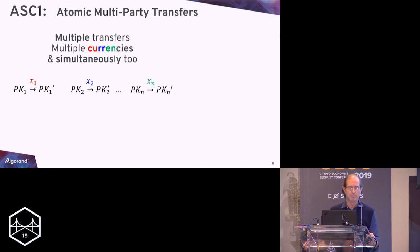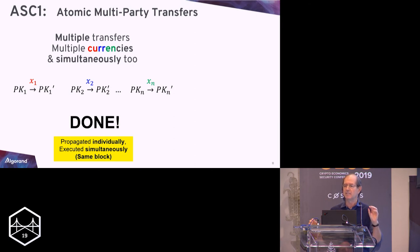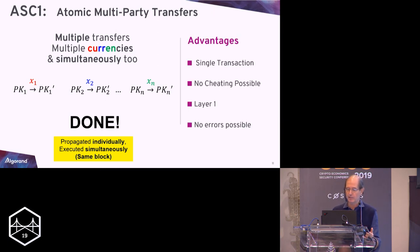The same thing, by the way, of atomic transfers are about multi-party. Assume there are multiple transfers in multiple currencies - red currency, blue currency, green currency, et cetera. All these payments have to be done simultaneously. Who wants to pay first? Nobody. But you want to do these things simultaneously, done. Again, everything here is propagated individually but they are actually executed only simultaneously. So I know that when I push the button to do my own job, I know that my payment is not going to go anywhere, posted anywhere, unless all of us together can be done. And in a few seconds if we want to be done, it will be done. Again we have the advantages. Single transaction, no cheating, layer one, no errors or smart contracts and complications like this.